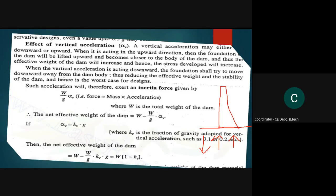If the vertical earthquake force acts upward, the foundation pushes upward along with the weight of the dam, so the net effective weight increases. If the direction is downward, the foundation tries to move away from the dam body, reducing the net effective weight.